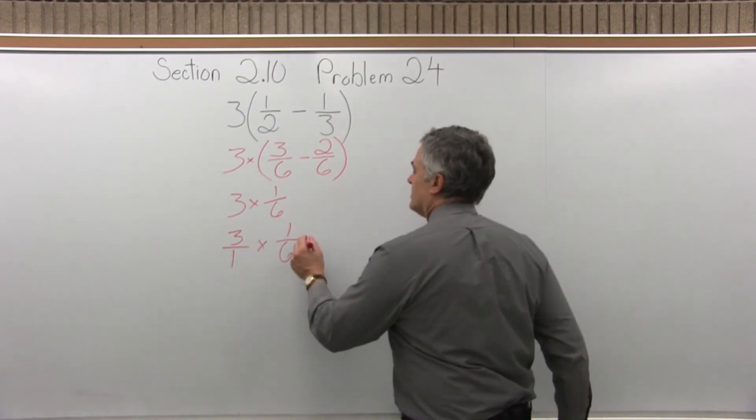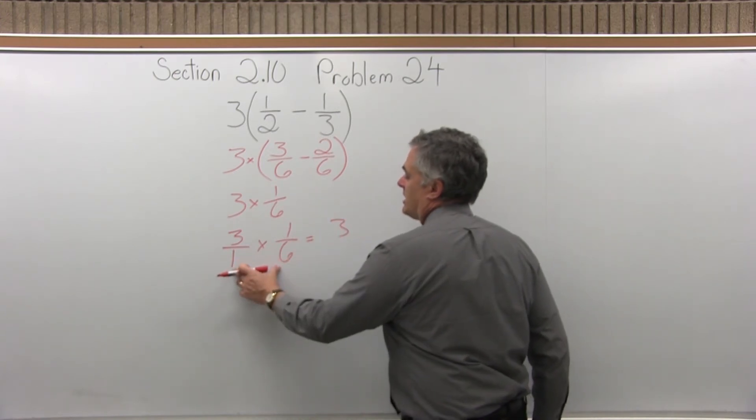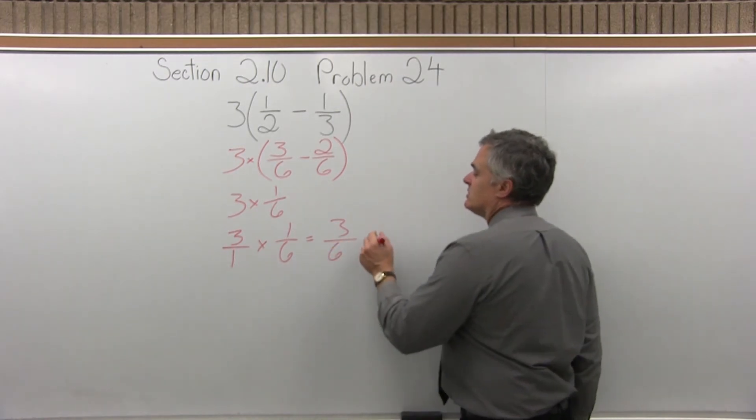Three times one is three. And bottom times bottom. Well, denominator times denominator. One times six is six. So that gives me three over six, which reduces to one-half.